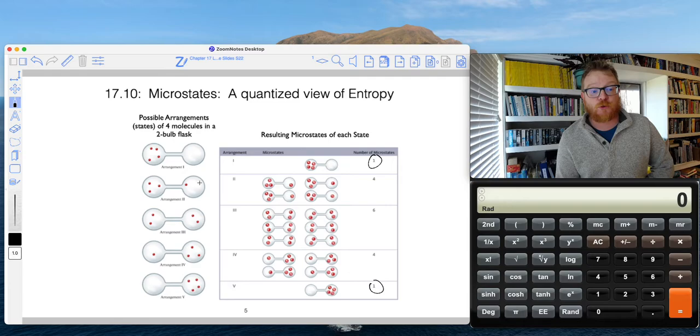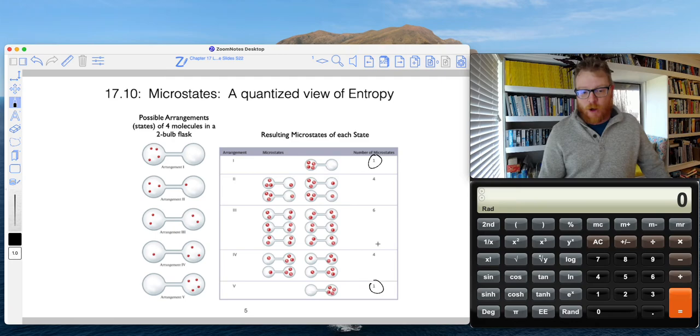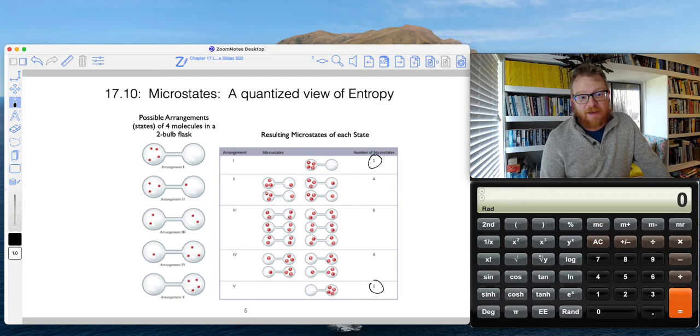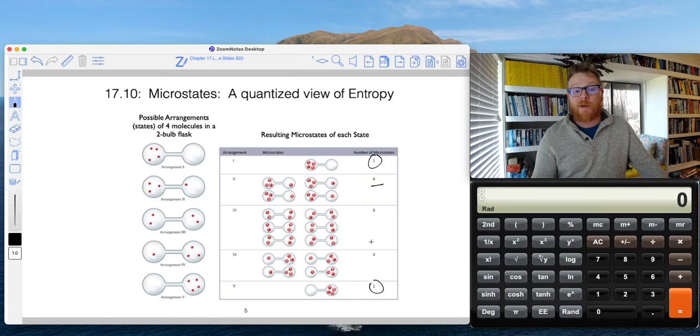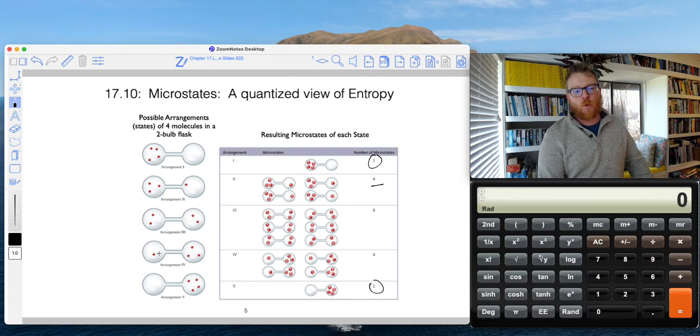However, things become more complicated when we have this three in one situation, because now we recognize we've specifically labeled each of these molecules. For example, we can have BDC and an A, or we can have ACD and a B, we can have ABD and a C, or finally, we can have ABC and a D. All the same, that gives us four microstates just for this three, one arrangement.